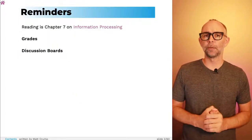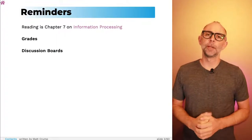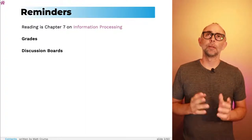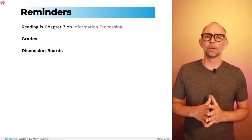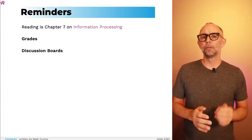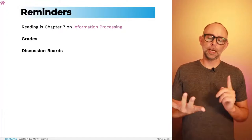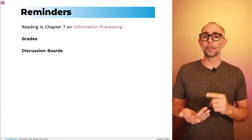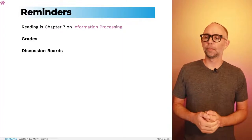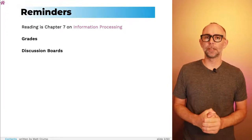Here are a few reminders if you're following along. You should be reading chapter 7 on information processing. We are about a third of the way through the course, maybe slightly over a third, and we've gone through our first midterm. Your grades for the midterm and for all the quizzes, writing assignments, and discussion board participation are all on Blackboard.